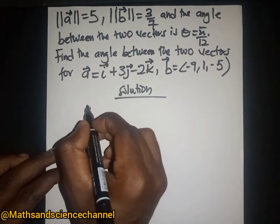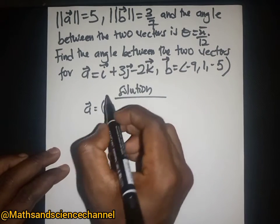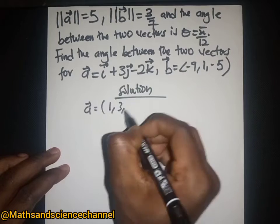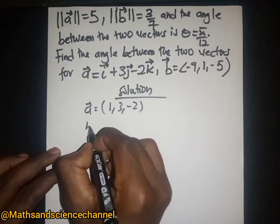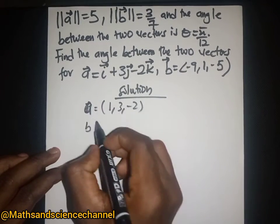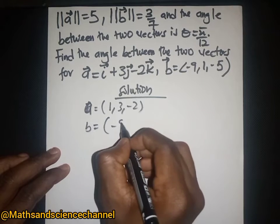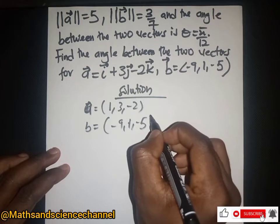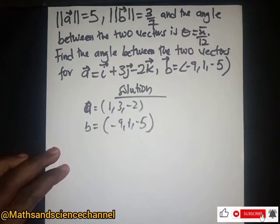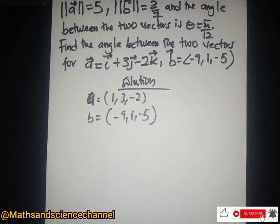We are given vector a in the form (1, 3, -2), and vector b as (-9, 1, -5). These are the two vectors we are given.